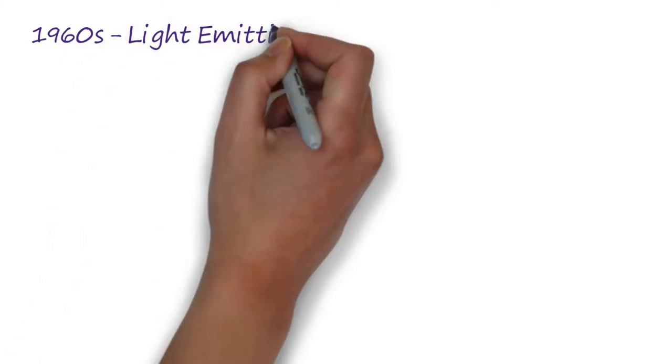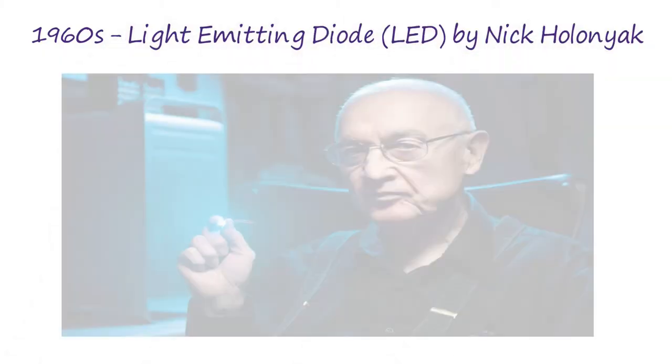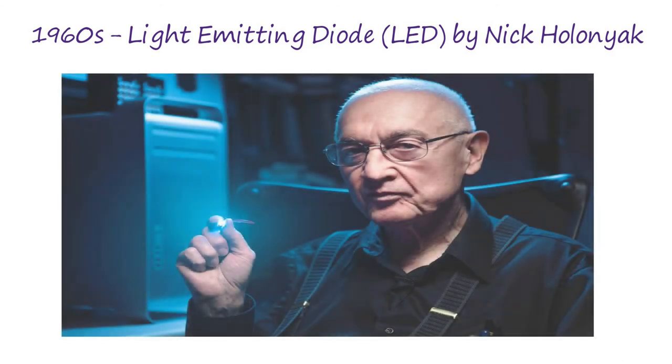The one lighting technology that was significantly different from the various bulbs invented in the 20th century is the Light Emitting Diode. LED lighting is a solid-state light that doesn't require a glass housing like traditional bulbs and produces light by converting electric current using a semiconductor. The first LED was invented in the 1960s by General Electric scientist Nick Holonyak, who called it the magic one.